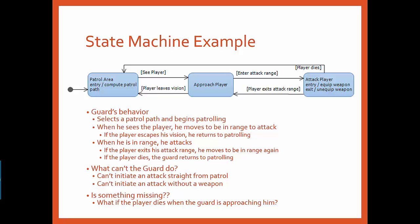While all of these behaviors are documented in this state machine, it is also important to understand what the guard cannot do in this system. He cannot initiate an attack directly from patrolling. He must first transition into the approach player state. However, this state can be very short if the player is already in attack range. He also can't initiate an attack without a weapon since transitioning into the attack player state requires a weapon to be equipped.